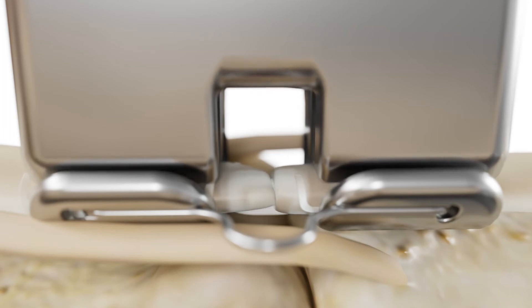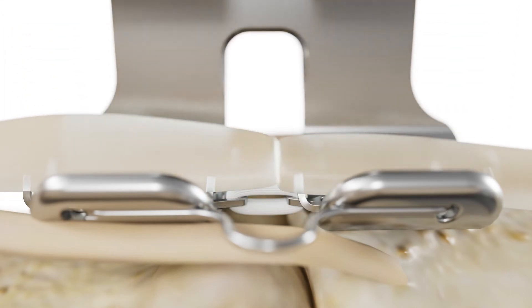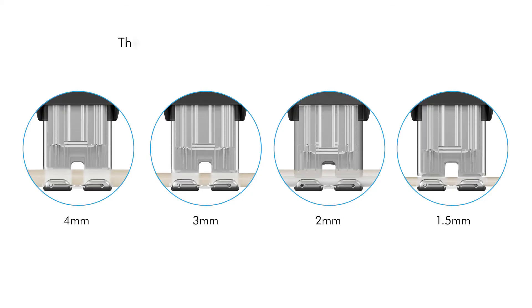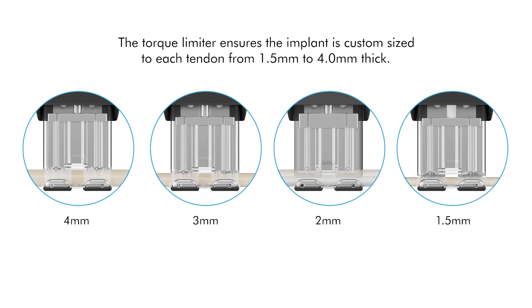The design of the system enables variable deployment of the implant, controlled by the thickness of the tendon being repaired. The deployed implant does not have a fixed height. The legs of the top component of the implant will curl more in thinner tendons or less in thicker tendons, as the implant is deployed and formed together.